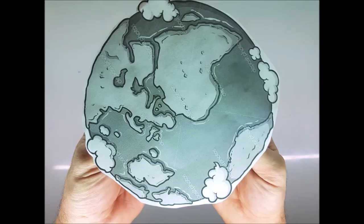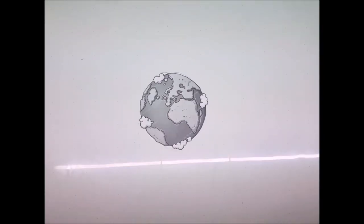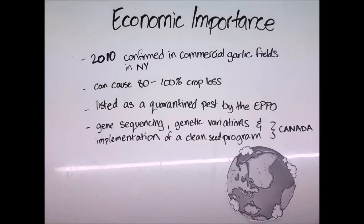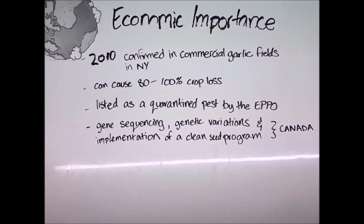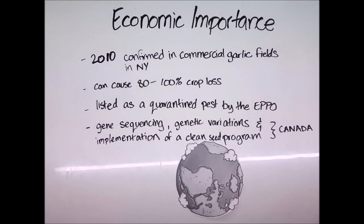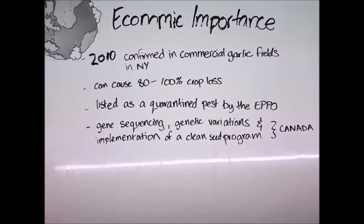D. dipsaci has been reported to cause up to 90% yield loss. Canada is trying to implement new methods to help control the spread of D. dipsaci. They are exploring gene sequencing to create resistant crops. There are certain resistant crops for nematodes, but none for garlic.